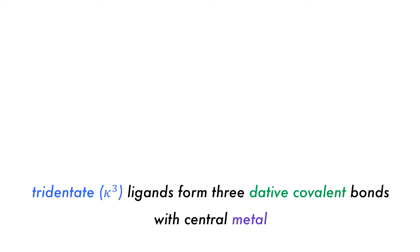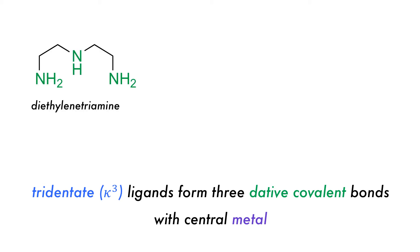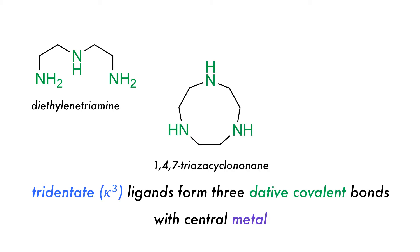Tridentate ligands form three dative covalent bonds with the central metal and are typified by diethylene triamine, which binds through three nitrogen atoms, 1,4,7-triaza-cyclononane, and 9-crown-3, among others.